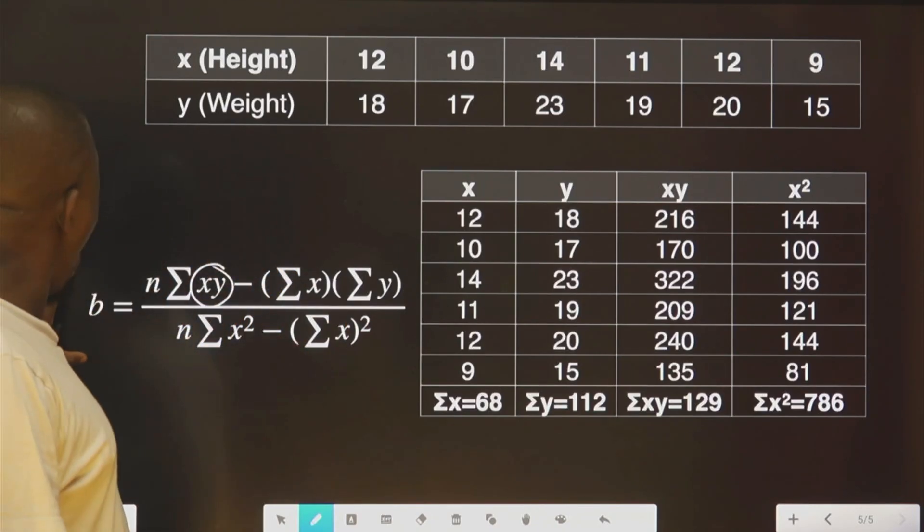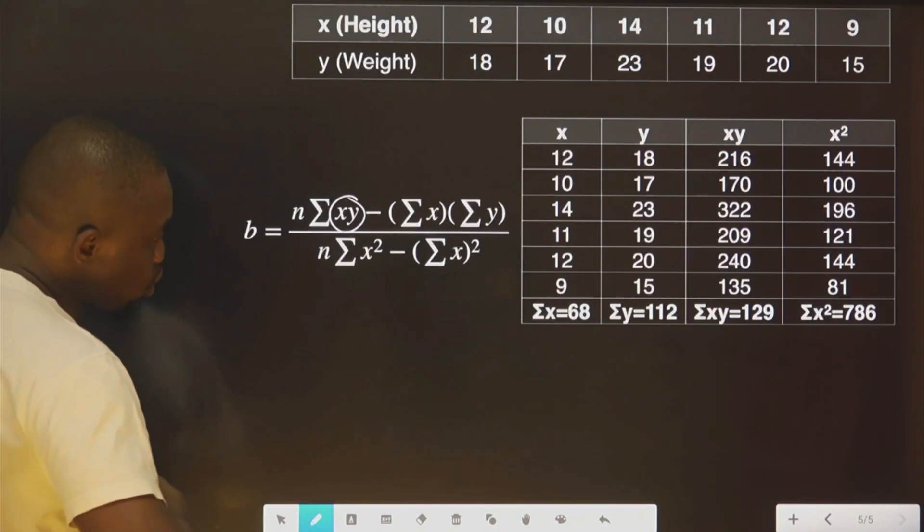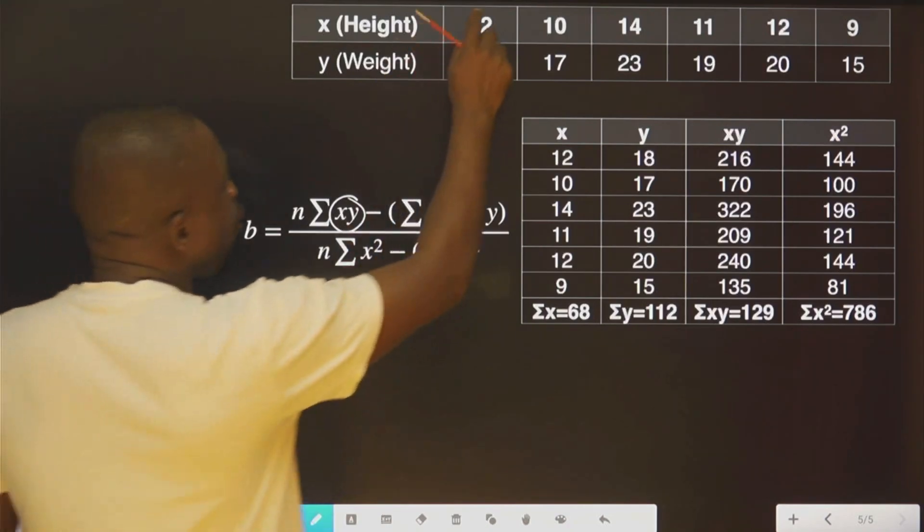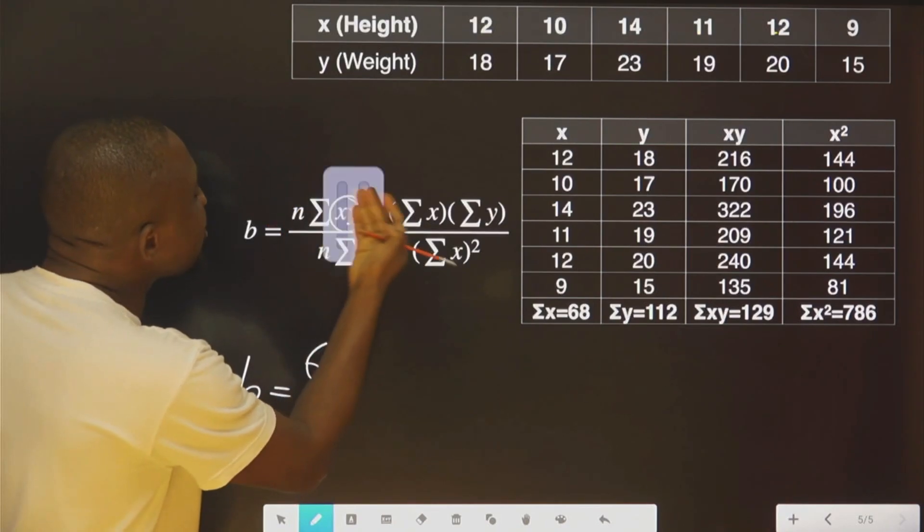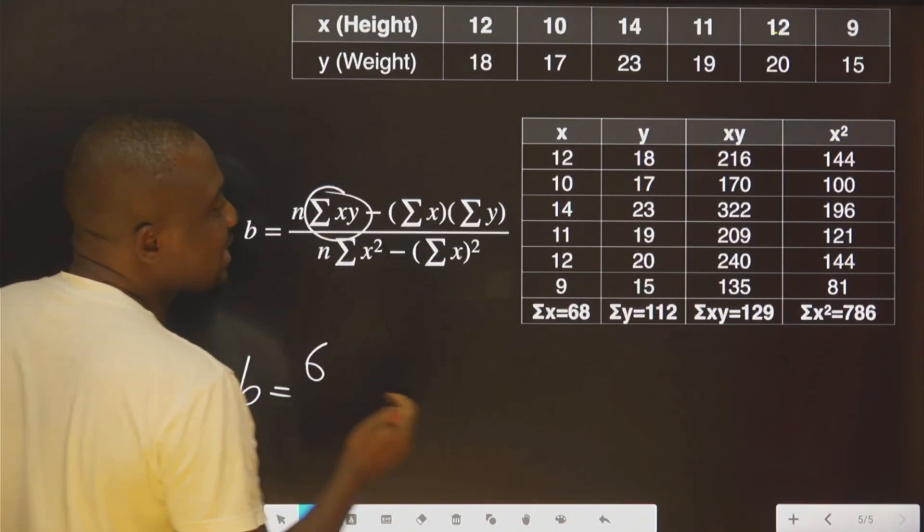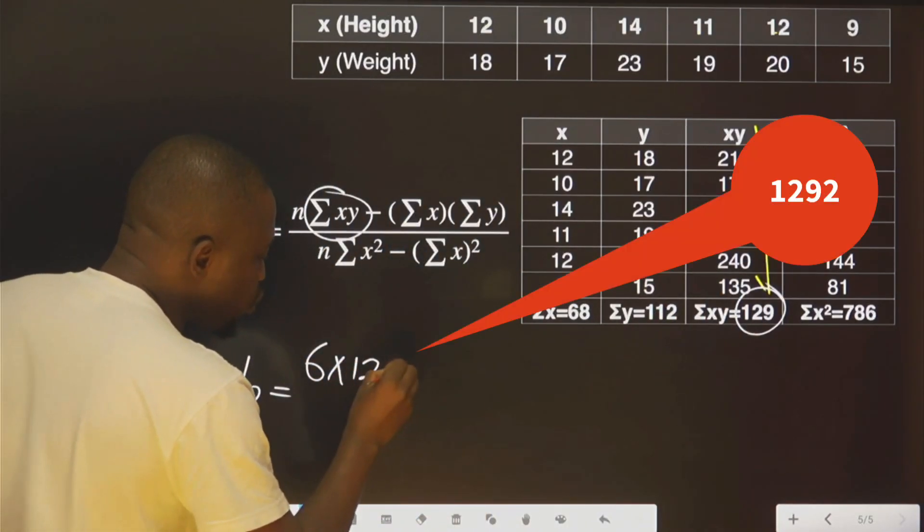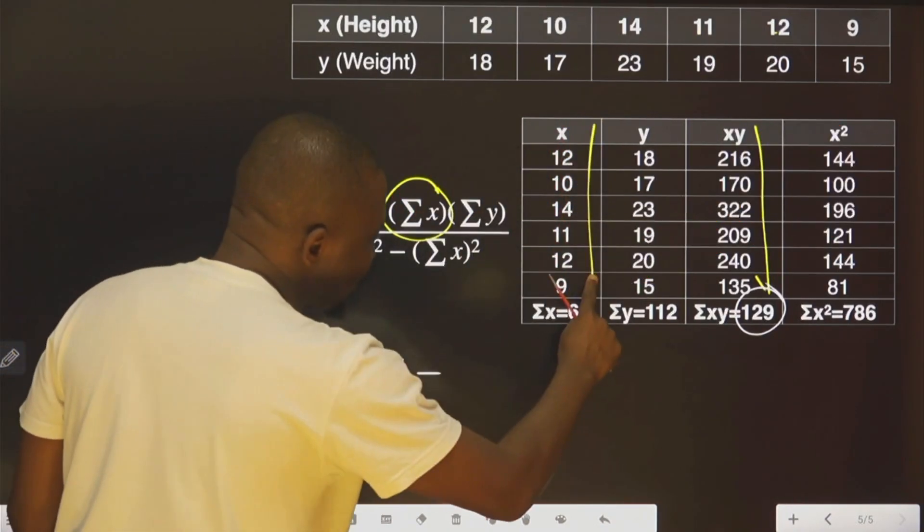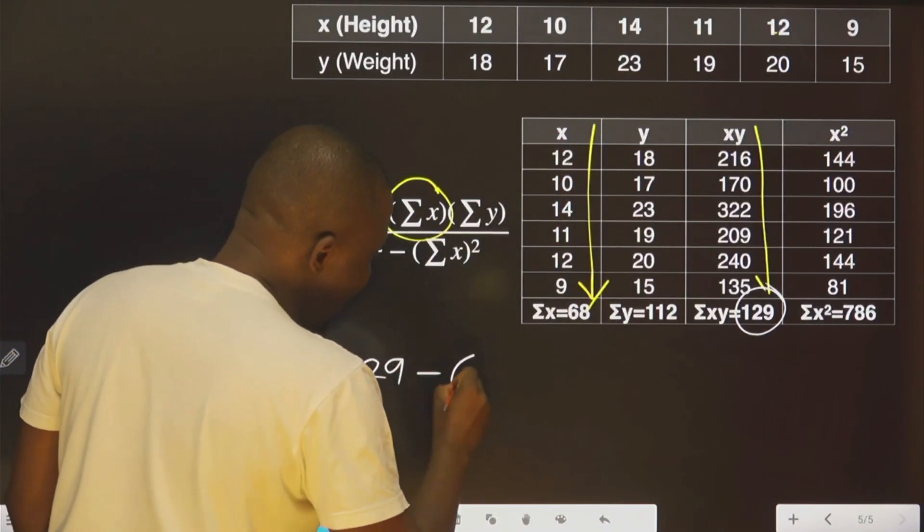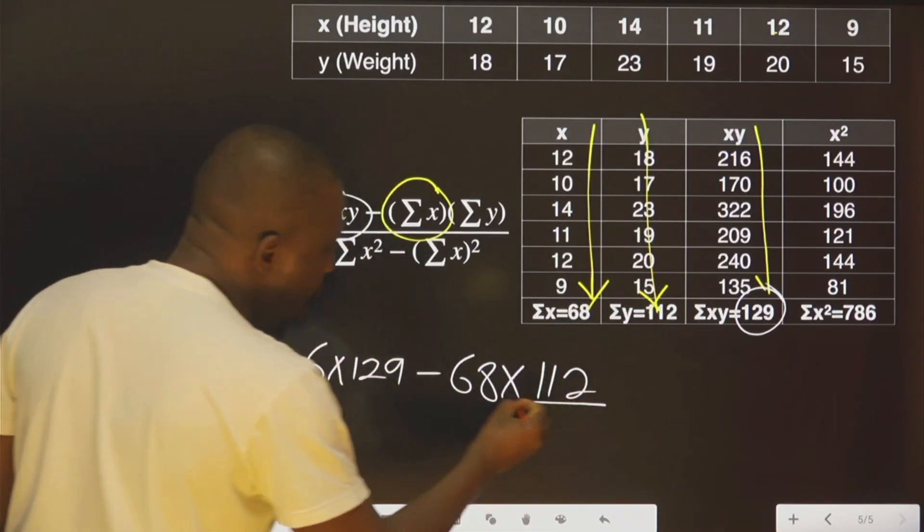Once you have done that now, all you need to do here is to substitute here. What are you substituting? You substitute b as equal to n is 6. Why 6? 1, 2, 3, 4, 5, 6. 6 people, multiplied by the summation of this, that is this, 1292, minus this, the summation of x, that is this, 68, multiplied by this summation, 112, all over.